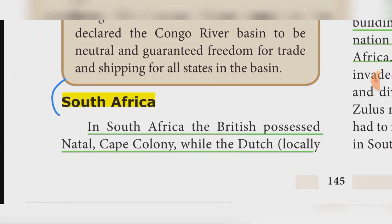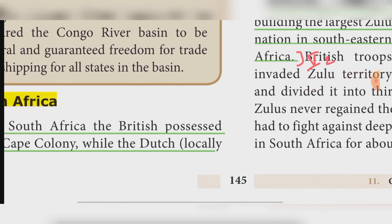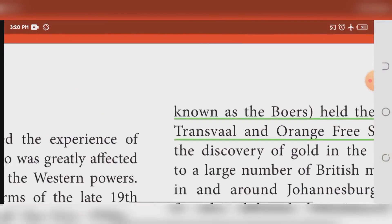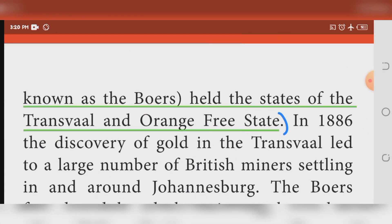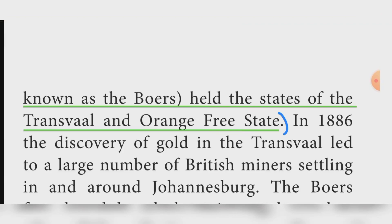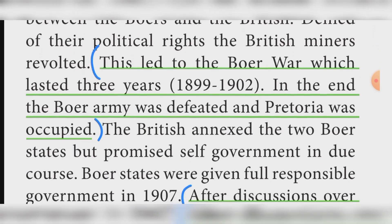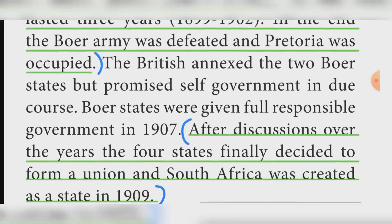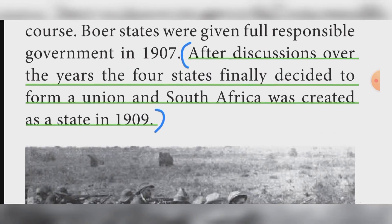South Africa: The British possessed Natal and the Cape Colony, while the Dutch — locally known as the Boers — held the states of the Transvaal and the Orange Free State. This led to the Boer War, which lasted three years from 1899 to 1902. In the end, the Boer army was defeated and Pretoria was occupied. After discussions, the four states decided to form a union, and South Africa was created as a state in 1909.